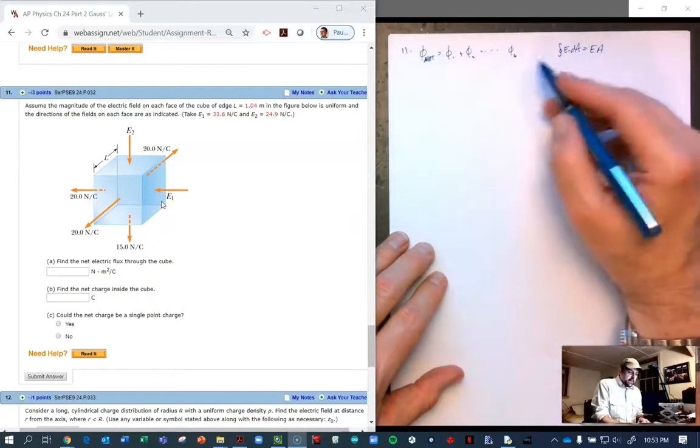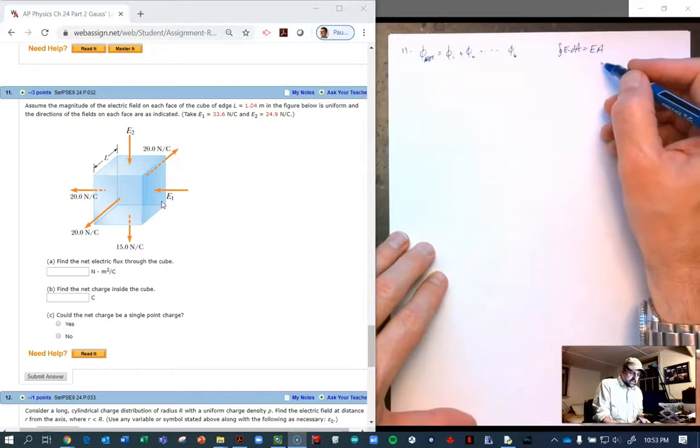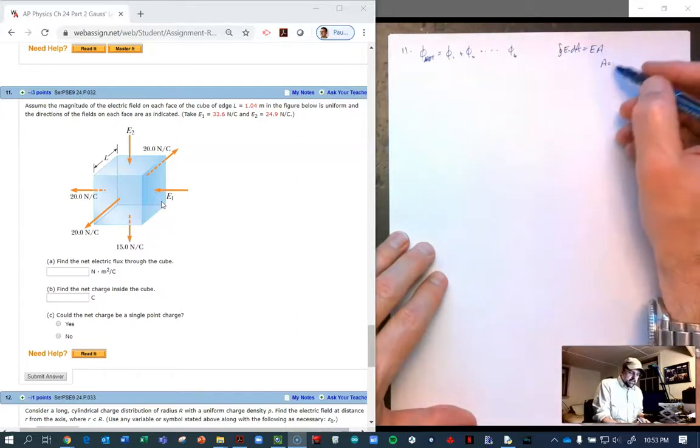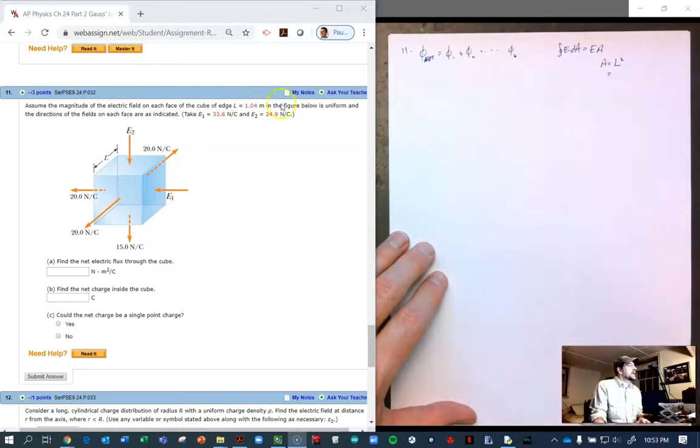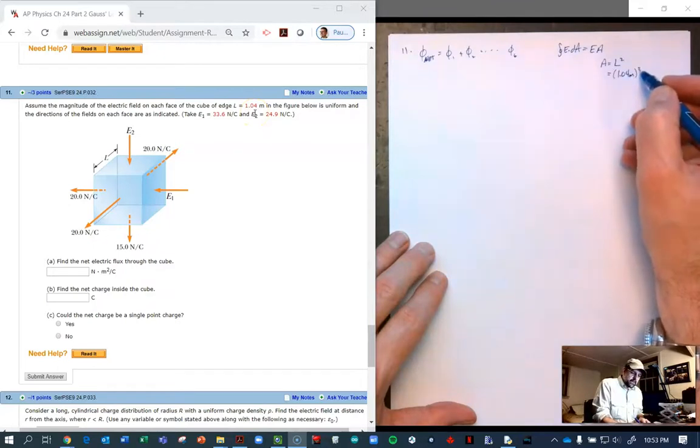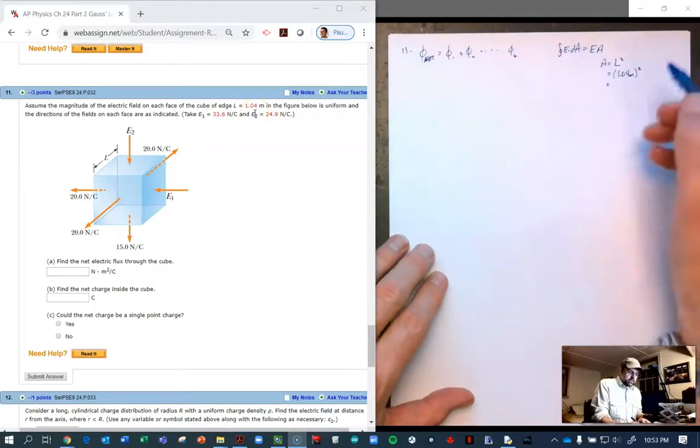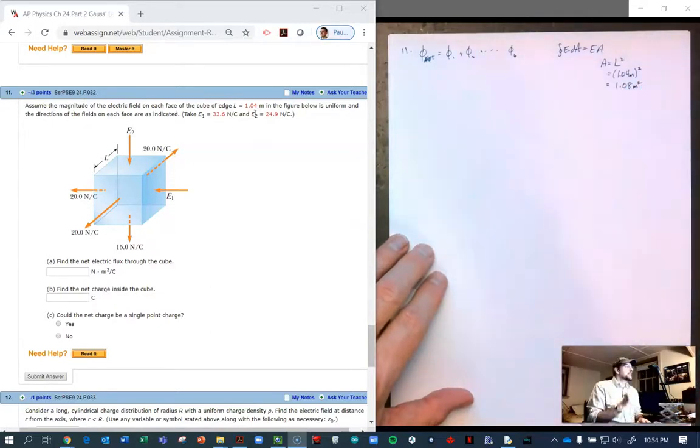And the area for my particular cube, well all cubes, the area of each face is just going to be L squared. And for me, my L happens to be 1.04 meters. So if we square that, we get 1.08 squared meters.